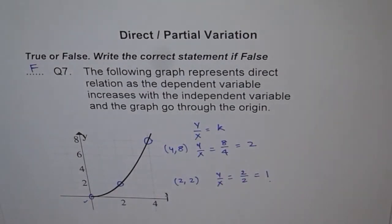8 over 4 is equal to 2, not 1. Since their ratio is not constant, it cannot be a direct variation. That is most important. So not a straight line and ratio is not constant - not a direct variation.